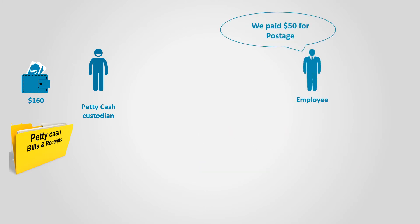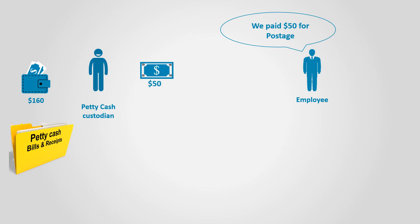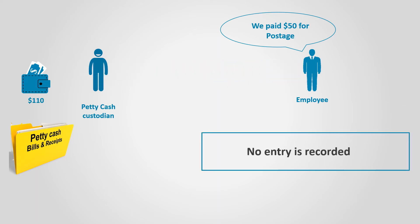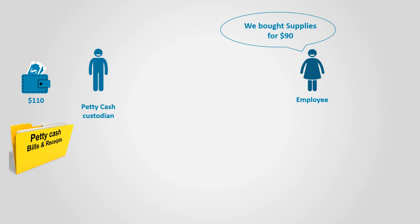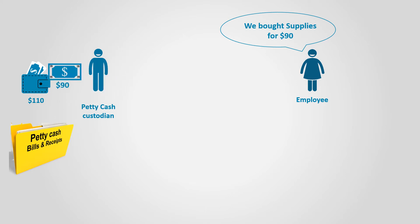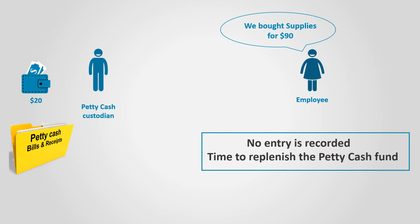Later, $50 are requested for buying flash drives. The receipt is collected and cash is released from the Petty Cash Fund — still no entry is required. Later, $90 is requested for paying postage. The receipts are presented and the cash is released. Now the Petty Cash custodian is running out of cash, so the Petty Cash Fund needs to be replenished.